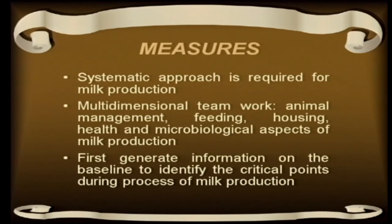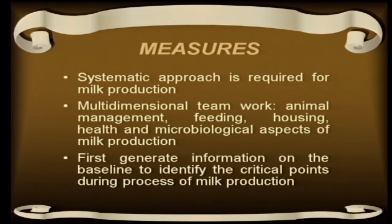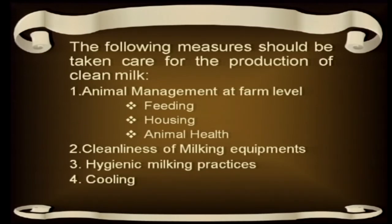What steps should we take? First, it requires a systematic approach from the very beginning and multi-dimensional teamwork — involving people in animal housing, animal management, feeding practices, housing practices, and health and microbiological aspects of milk production. We also need to identify the critical points on a particular farm where more infection or contamination can take place. The four steps to be taken are: animal management at the farm level (feeding, housing, animal health), cleanliness of milking equipment (milk pail and storage tank), hygienic milking practices, and cooling.